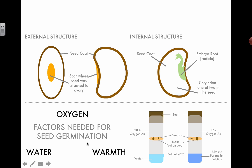Germination is the process of getting a seed to start to grow. You can do lots of experiments investigating how the three factors — water, oxygen, and temperature — affect germination. For example, a pyrogallol alkaline solution can actually absorb some of the oxygen, so you can vary the oxygen present and see if that allows seeds to germinate or not.